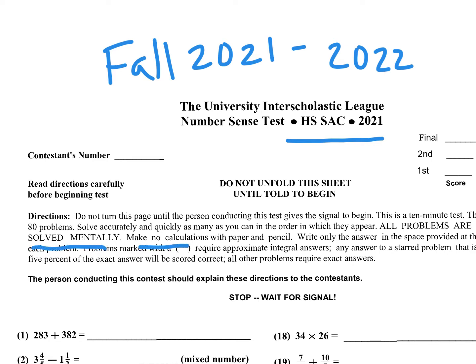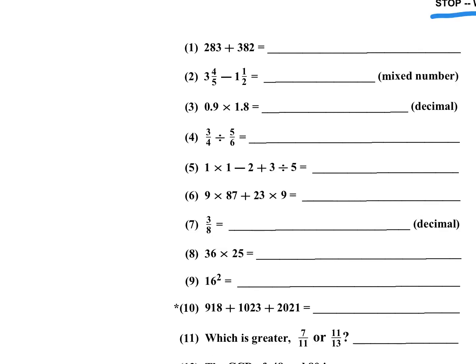There are 80 problems. This is a 10-minute test. All problems are to be solved mentally. Make no calculations with paper and pencil. Write only the answer provided. Star problems are approximate integral answers, and you get plus or minus 5% range on those. I'm going to go through the first column on these problems and explain the steps on the side. You are to write only the answers, but I will write on the left margin just to show some of the steps or shortcuts to highlight those for you.